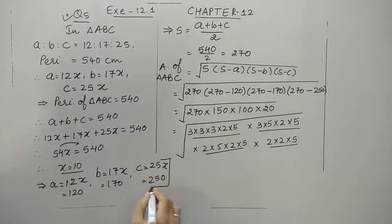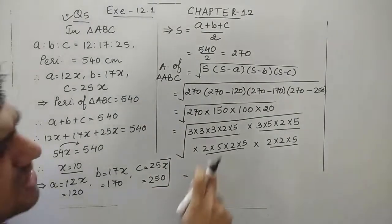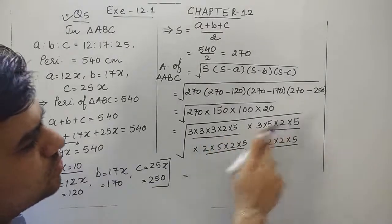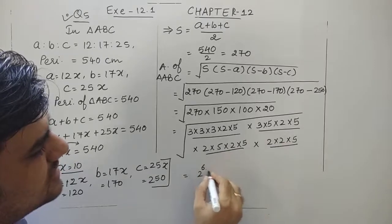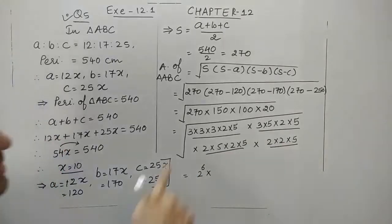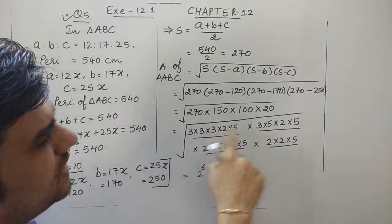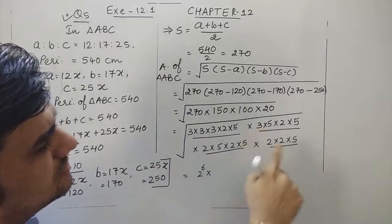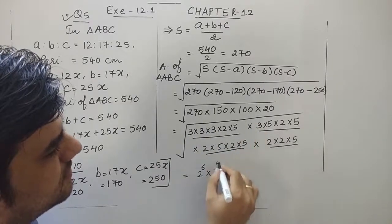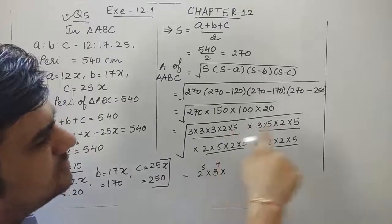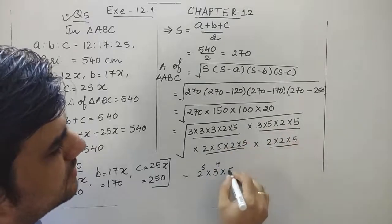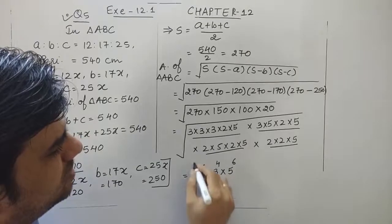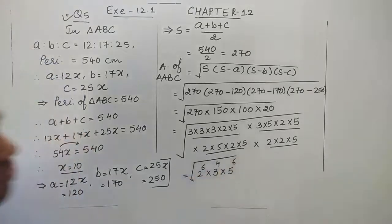Now let us count how many times each prime appears. 2 appears 6 times, 3 appears 4 times, and 5 appears 6 times. We have only 3 distinct prime factors: 2, 3, and 5. All their powers are even numbers.